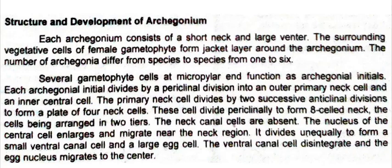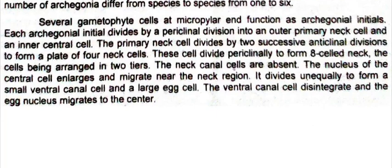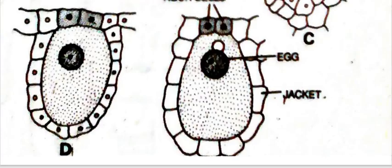First we see the diagram of the mature archegonium. This is the neck region of the archegonium — the neck is very small and no neck canal cells are present in the neck region. This is the large ventral part which contains the egg nucleus.